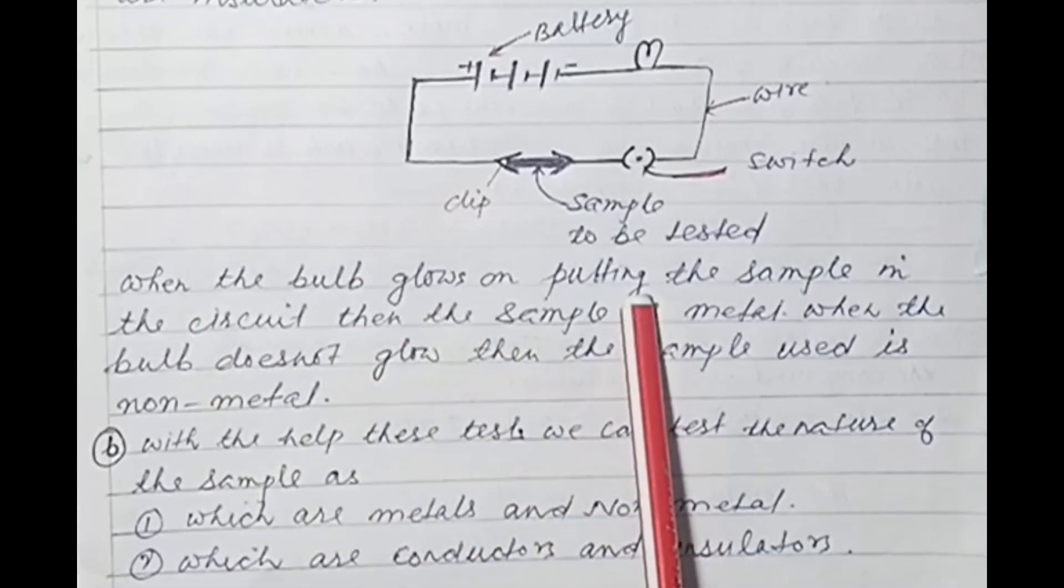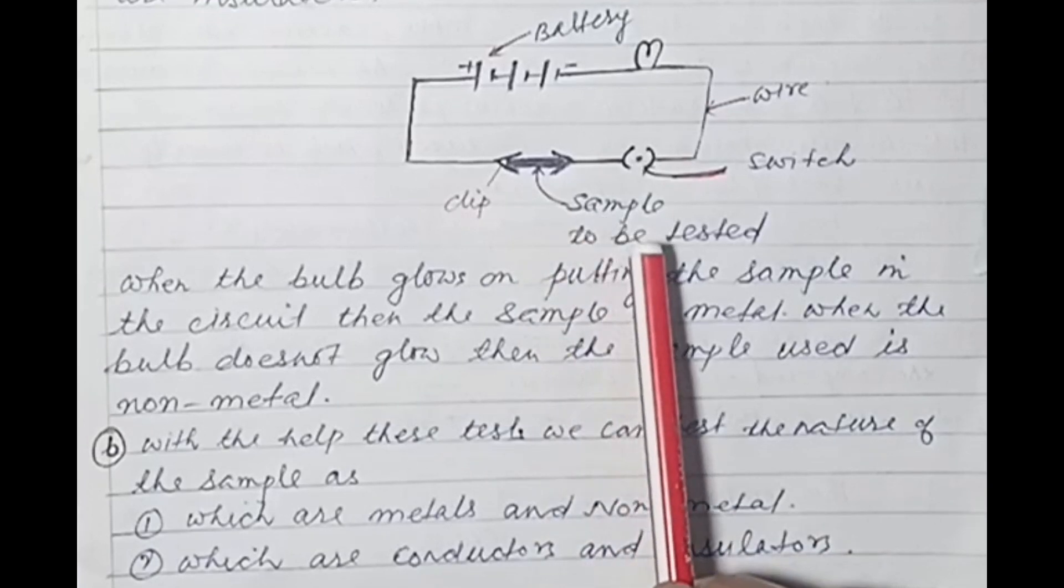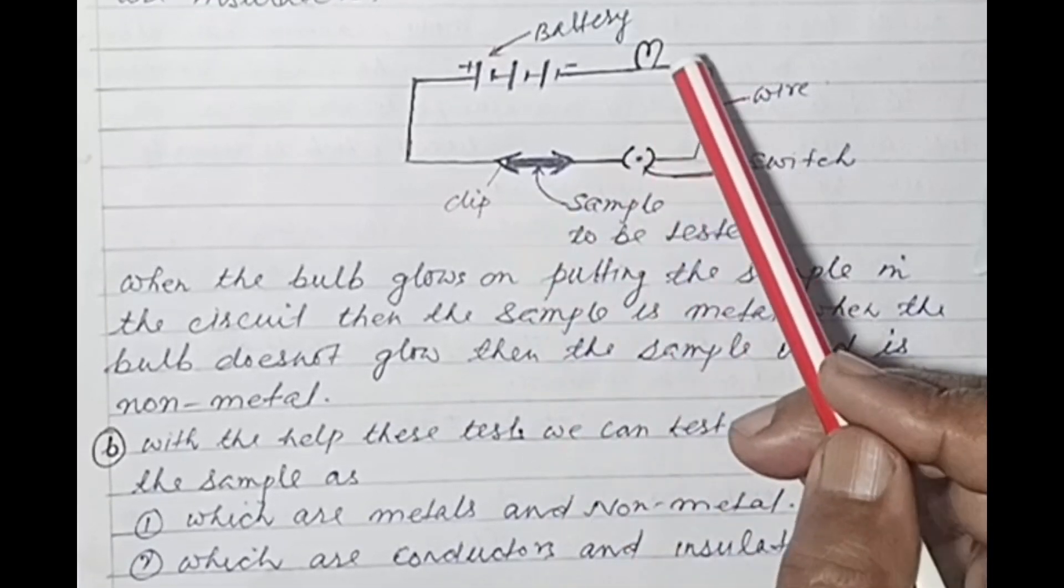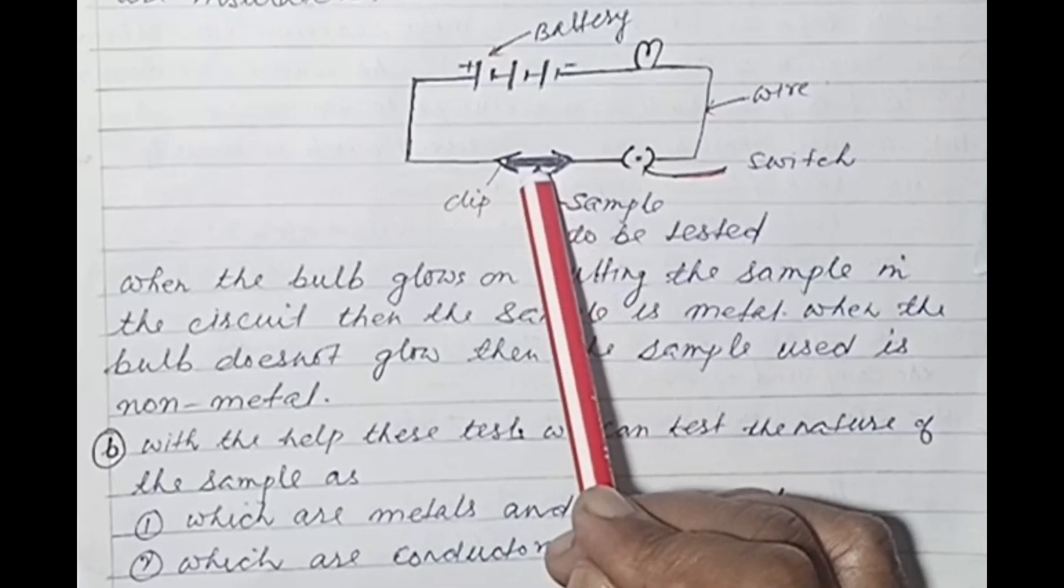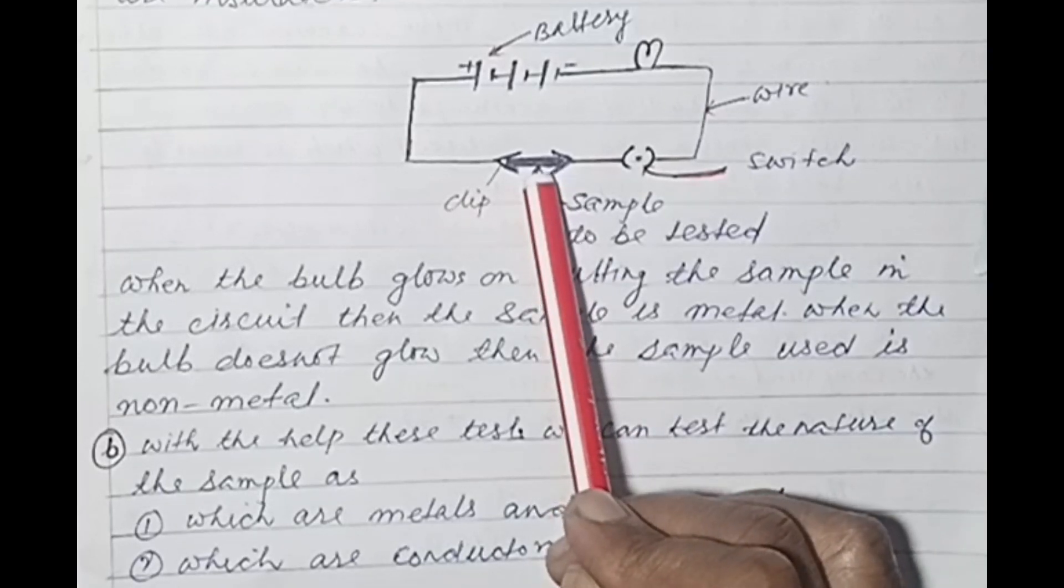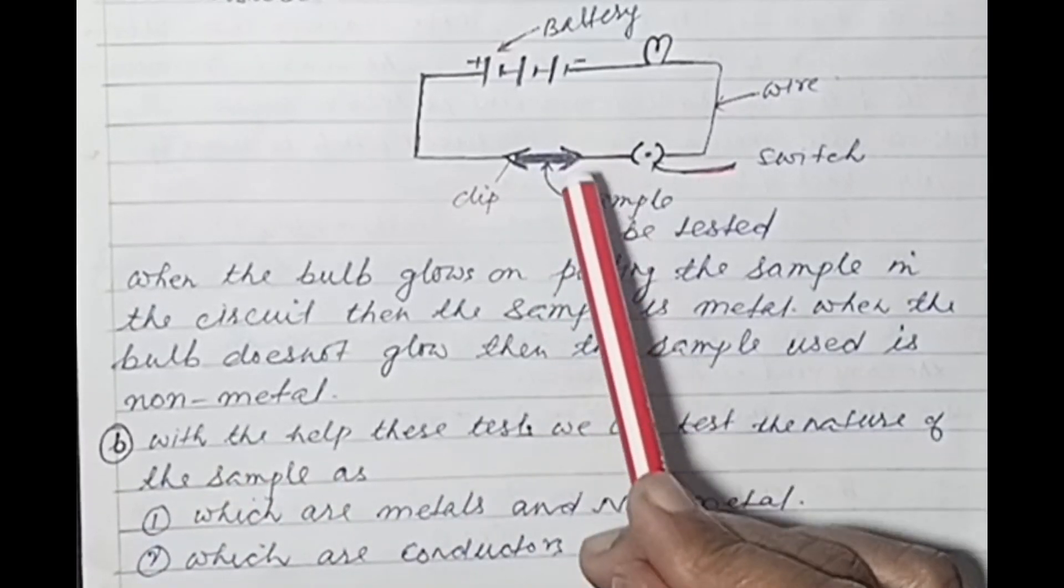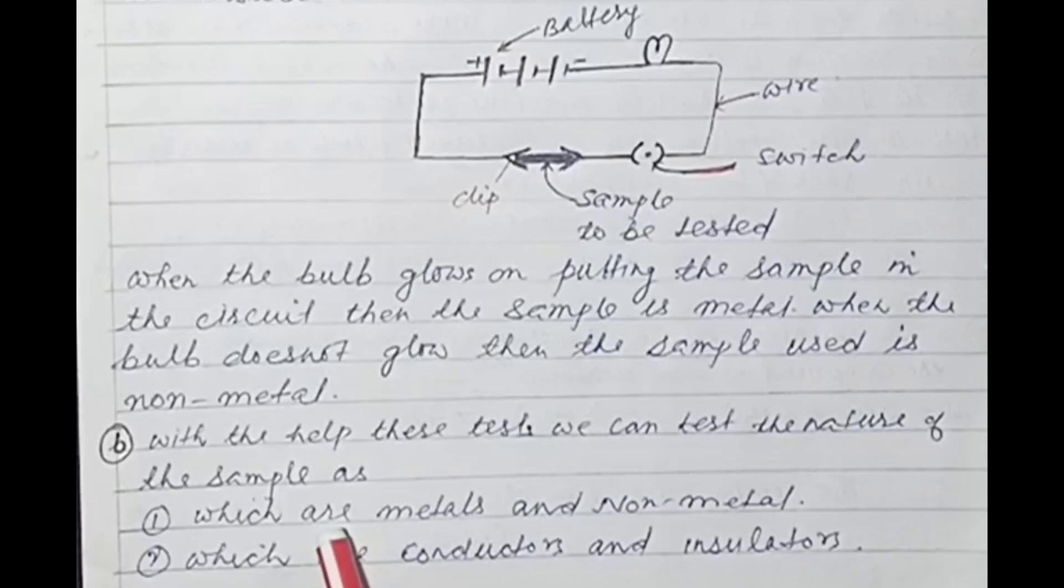If bulb glows then we will understand that sample is metal, and if bulb does not glow then the sample is non-metal. This way we can tell which sample is metal and which is non-metal, and which is conductor and which is insulator.